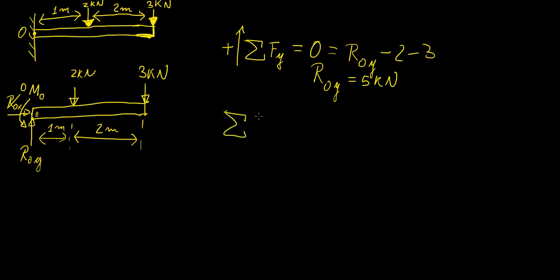And then we do the sum of the moments about point O. And let's assume this direction is positive. So we have that equal to zero. And then we have these two forces. So the first one we have is this one, which is the force acting at that single point. And then we're going to have this one over here. So that's one meter times two. So that's minus two. And then this one over here is three times three. So that's the total distance. So minus nine. So that means that MO is going to be equal to 11 kilonewtons meters.